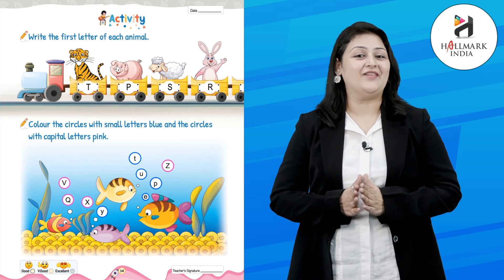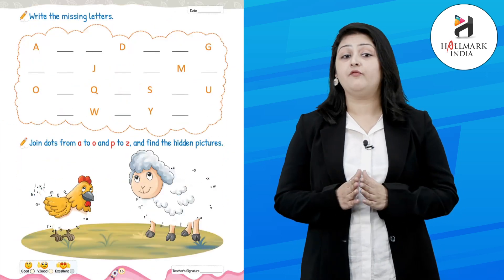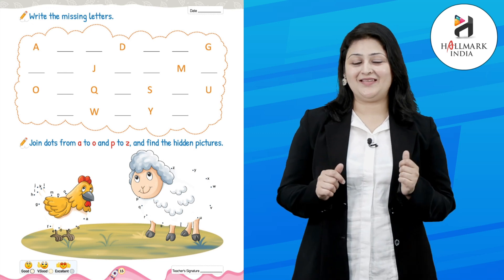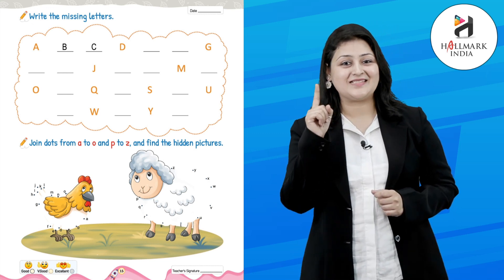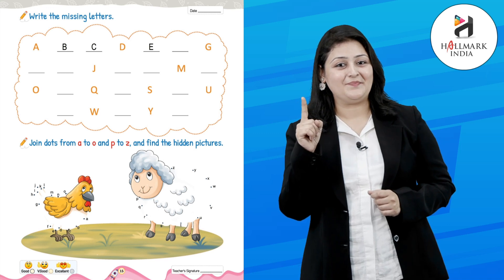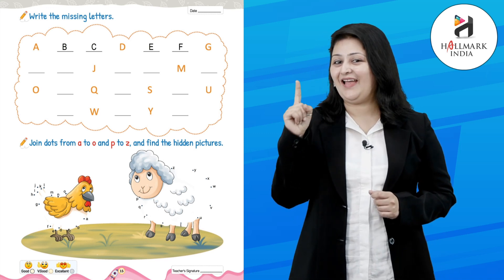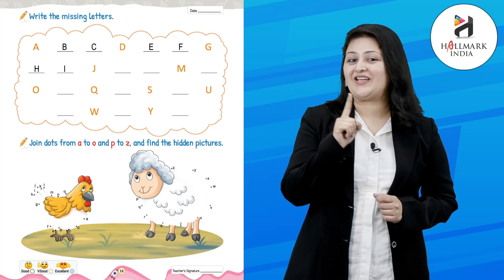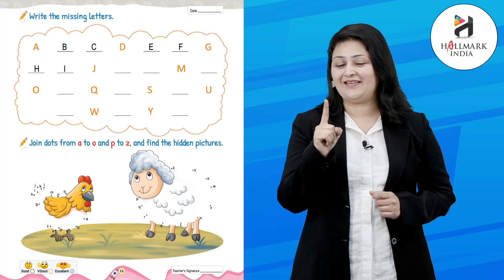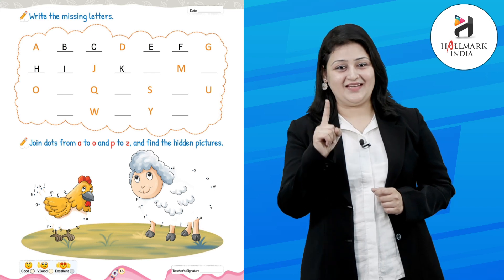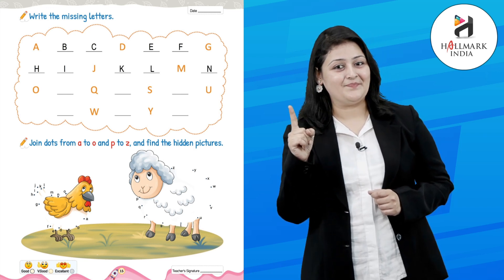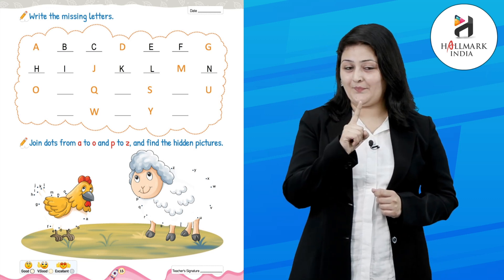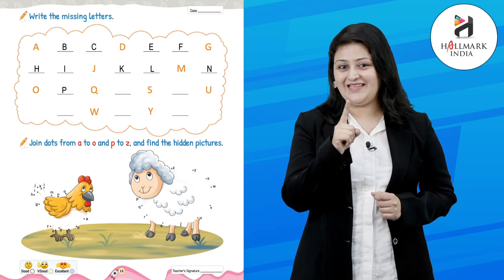Great, you've done a good job! Now we need to write the missing letters. Let's start: A, B, C, D — great! E, F — great! G, H, I — great! J, K, L, M — amazing! N, O, P — yes!